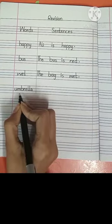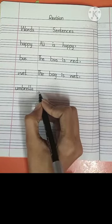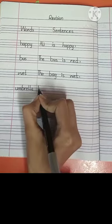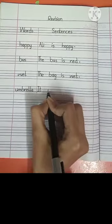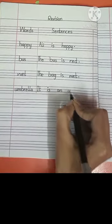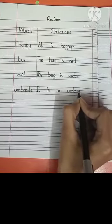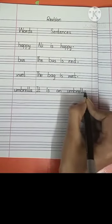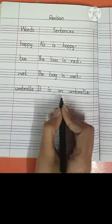Look at the next one. The next word is umbrella. You can write here: this is an umbrella, it is an umbrella, this is my umbrella. I will write here: it is an umbrella. Write with me. It is an umbrella. U-M-B-R-E-double L-A, umbrella. Put a full stop here. It is an umbrella.